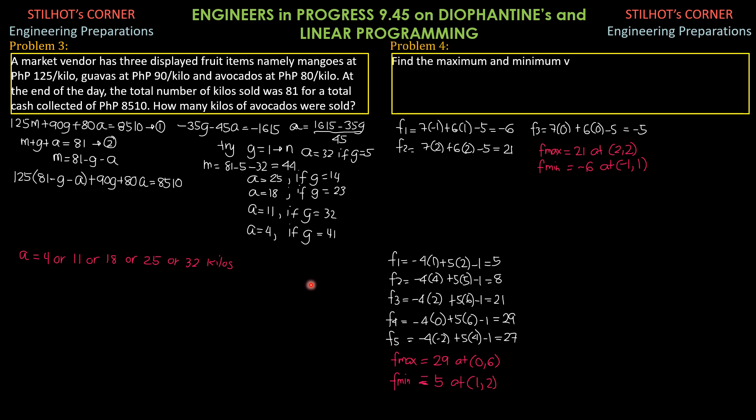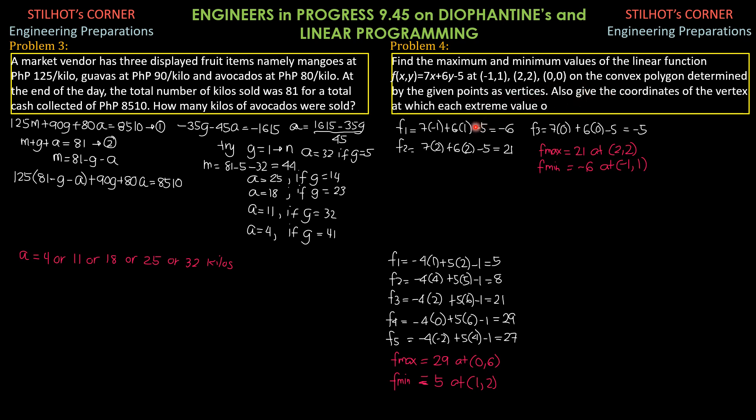Problem 4. Find the maximum and minimum values of the linear function. So, F of quantity XY equals 7X plus 6Y minus 5 at negative 1 comma 1, 2 comma 2, 0 comma 0 on the convex polygon determined by the given points as vertices. Also, give the coordinates of the vertex at which each extreme value occurs. So, we have maximum and minimum.